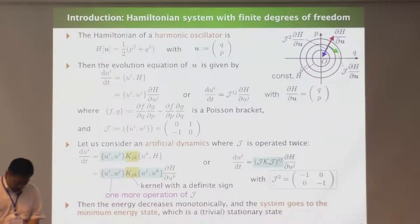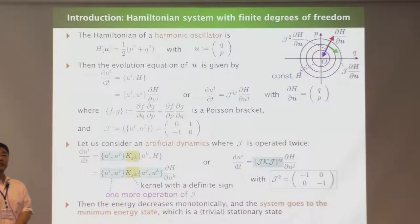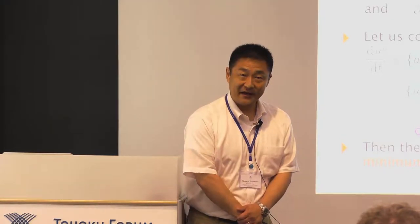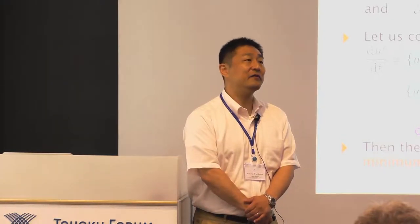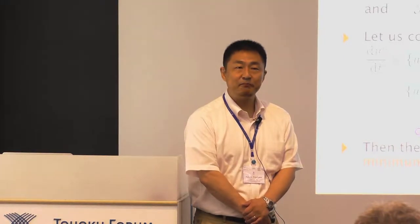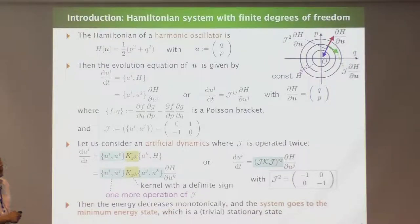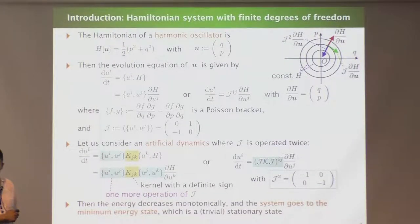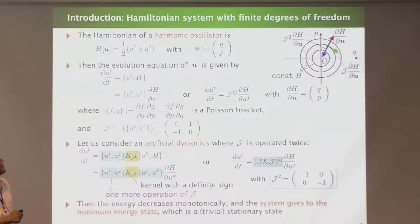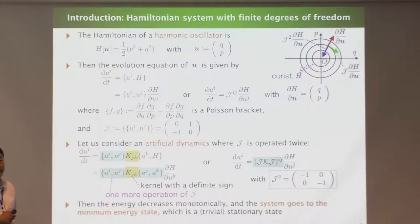The idea of the new method may be best understood by using a harmonic oscillator, which is an example of finite degrees of freedom — the simplest one. This is the Hamiltonian for the harmonic oscillator: P is the canonical momentum, Q is the canonical coordinate, this is kinetic energy, and this is potential energy. H is constant for this harmonic oscillator without dissipation.